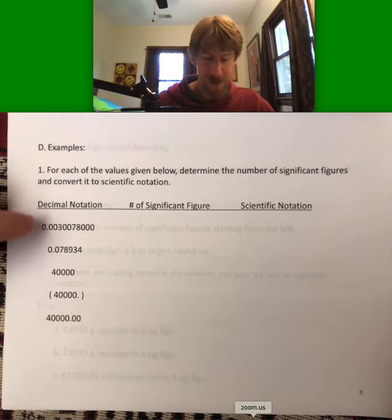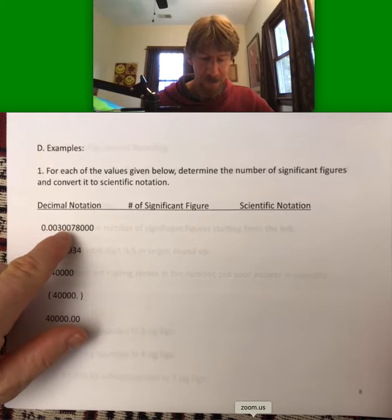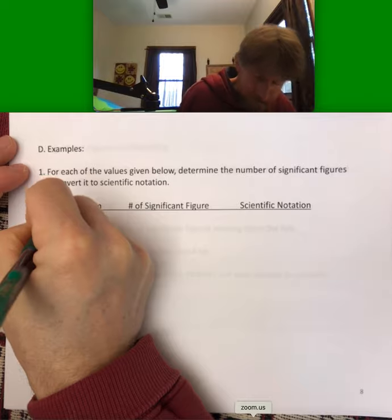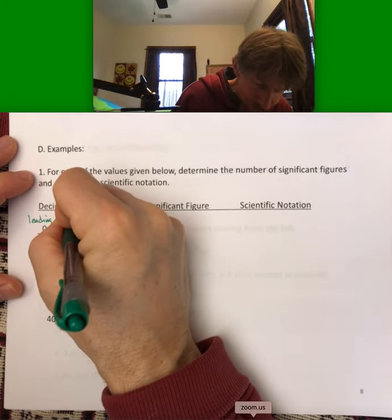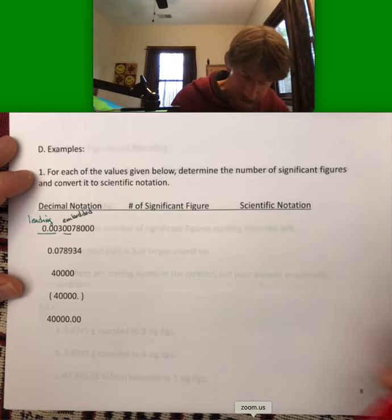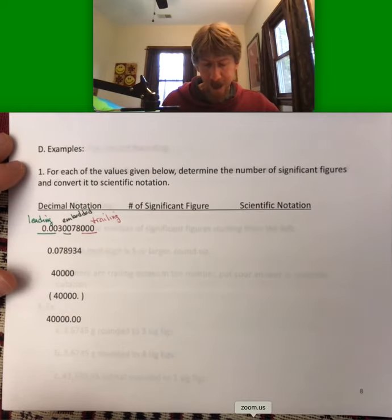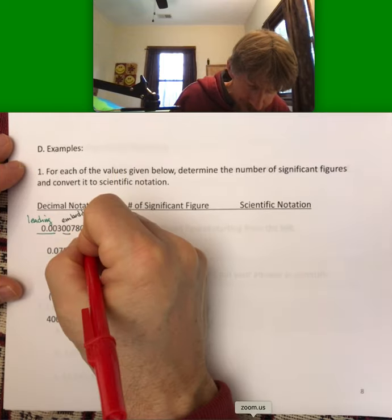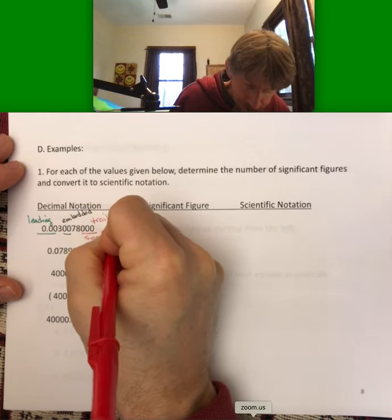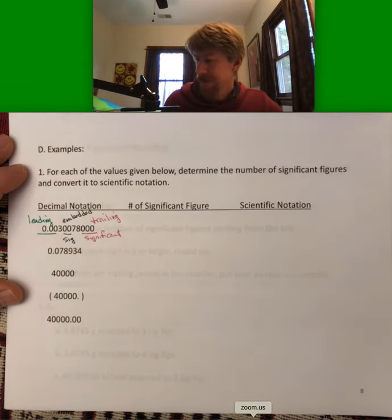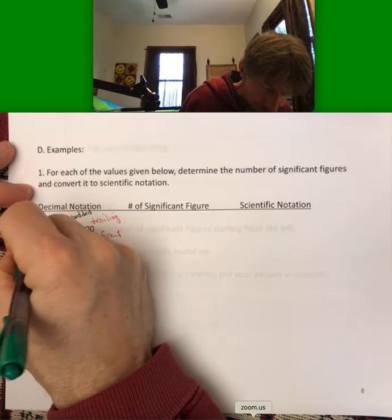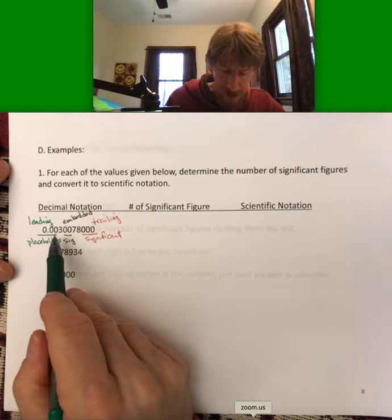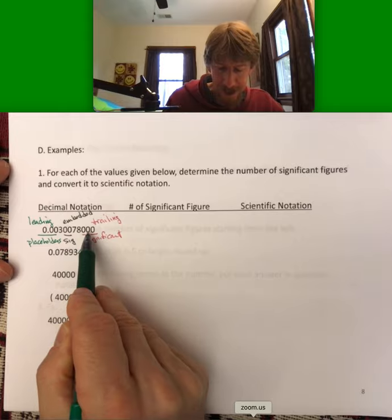Now, it says for each of the values given below, determine the number of significant figures and convert it to scientific notation. This first number here has both leading, embedded, and trailing zeros. So leading, embedded, and trailing zeros. Trailing zeros are to the right of the decimal point, so that means they are significant. Embedded zeros are always significant, and leading zeros are placeholders, which means they are not significant and they will disappear when we put it in scientific notation.